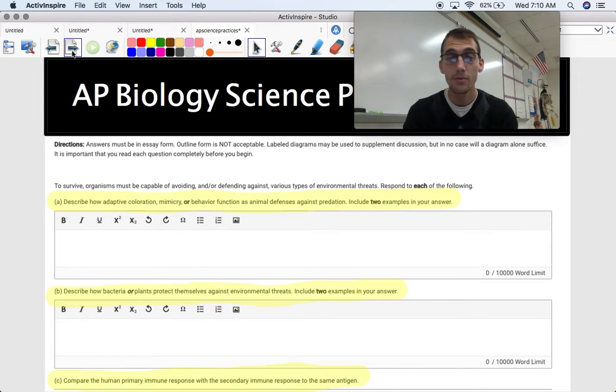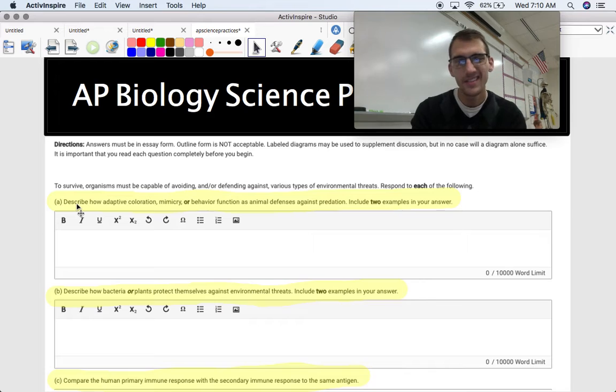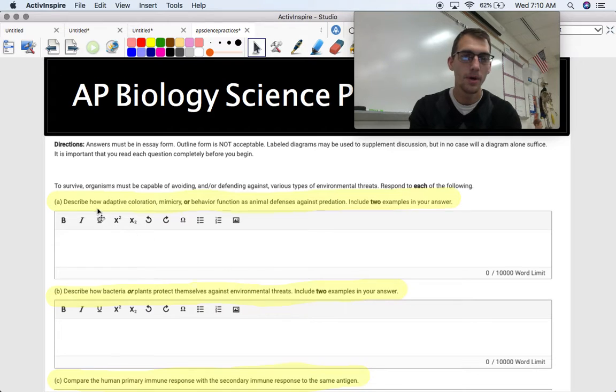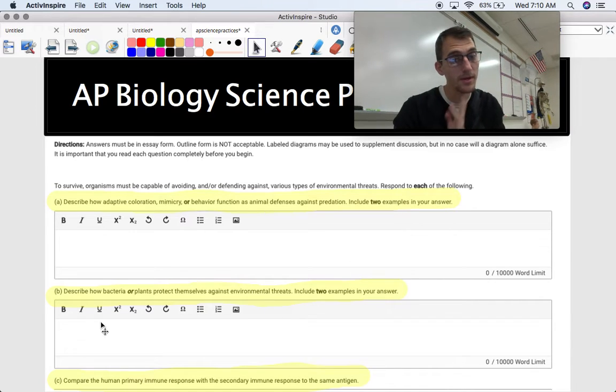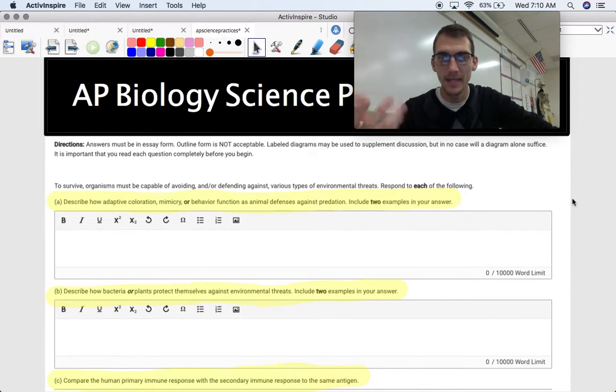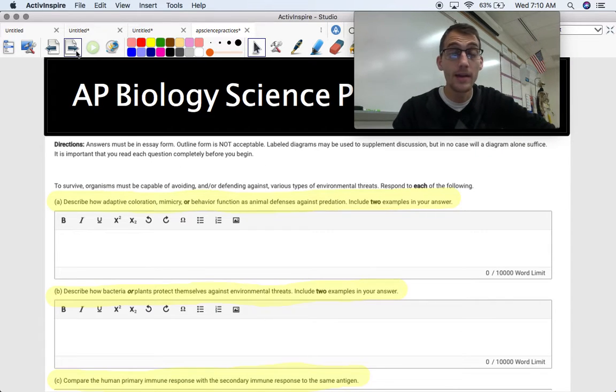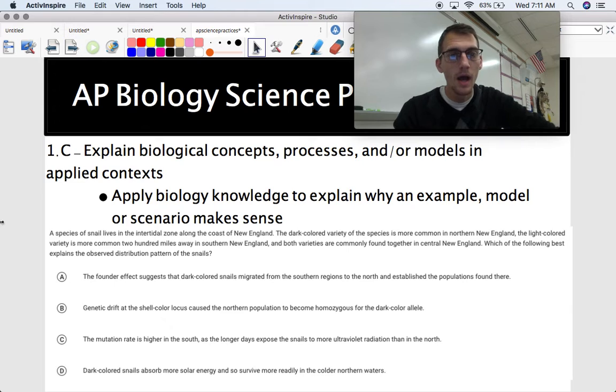Here's a three-part FRQ that is described as being 1.B, explaining. So again, even though you still have to be able to kind of explain things, even though it says describe right here, but this is describe how adaptive coloration, mimicry, or behavior functions, animal defenses against predation, describe how bacteria or plants protect themselves. So that's kind of explaining, describing how something works, and then comparing primary human response to secondary immune response to the same antigen. That is, you have to be able to explain things in order to answer that question again. So that is going to be a 1.B FRQ.